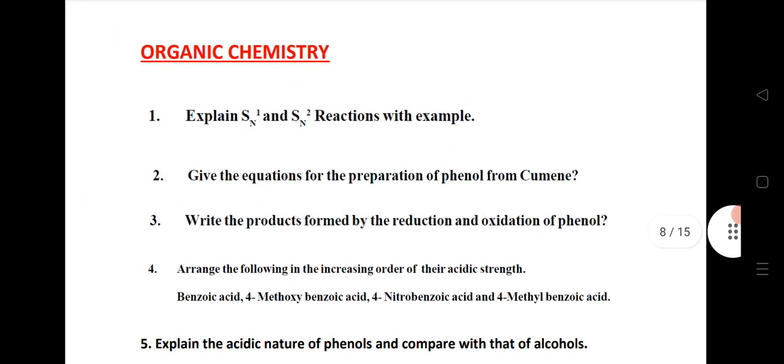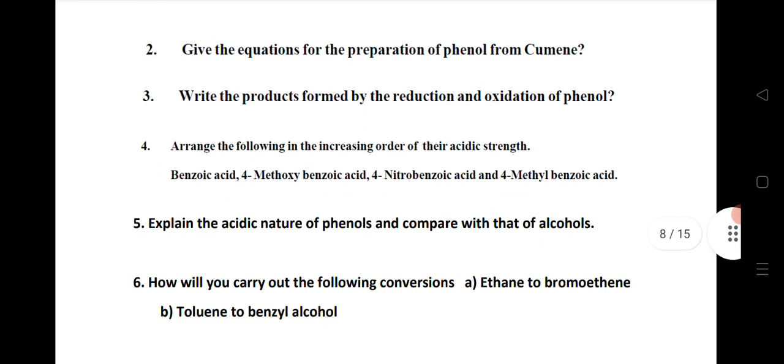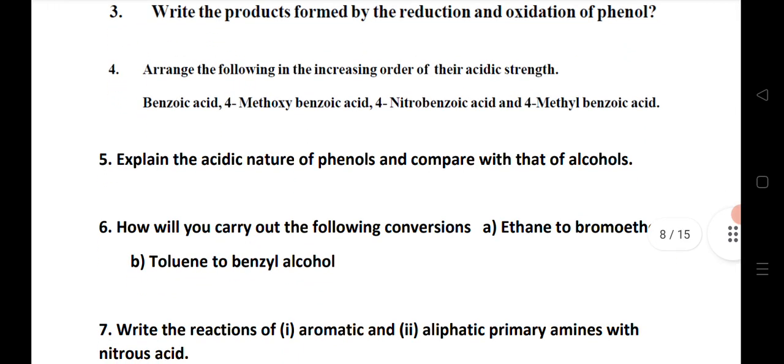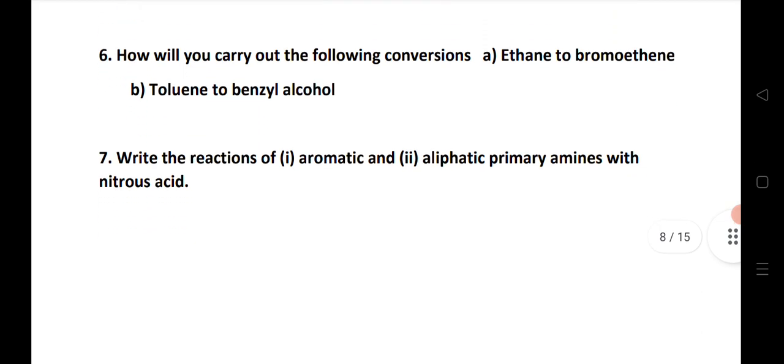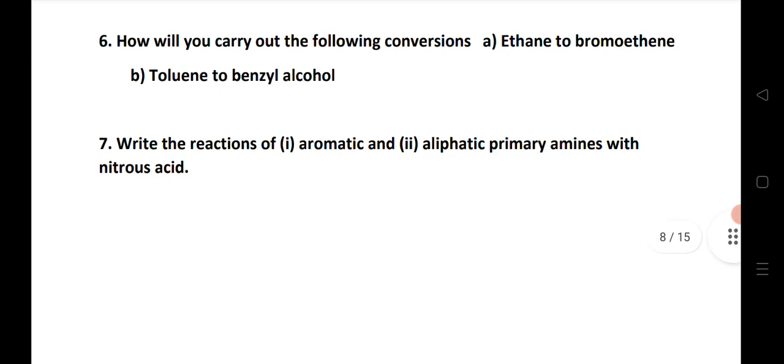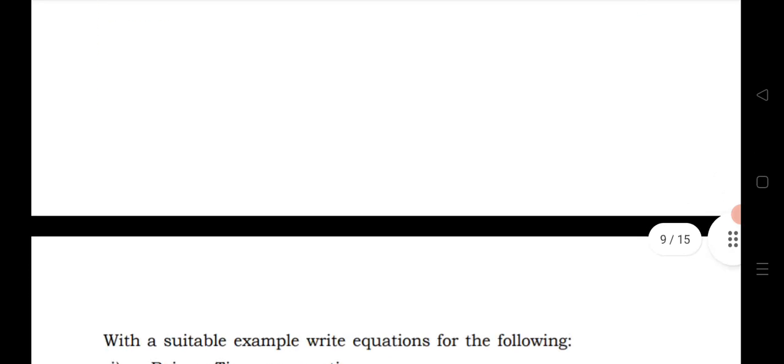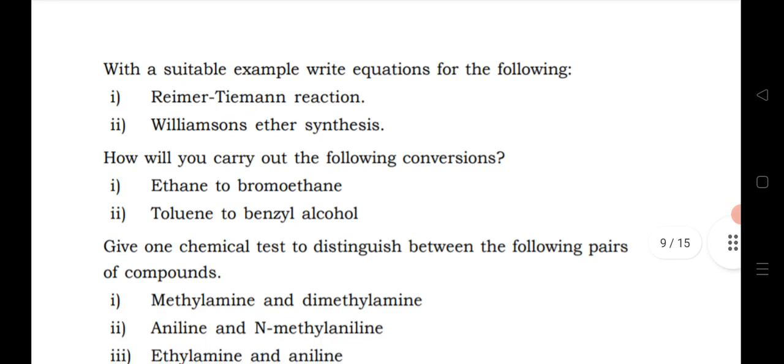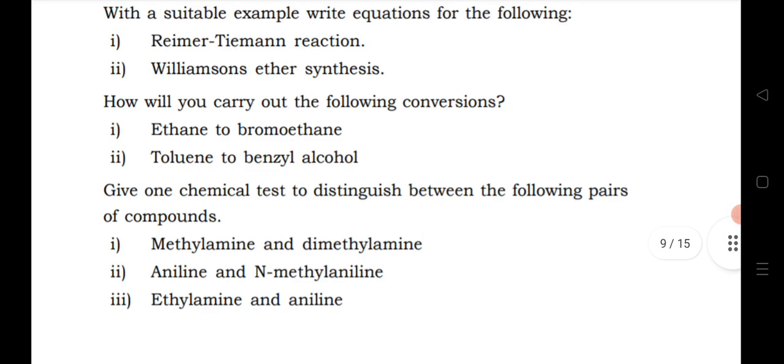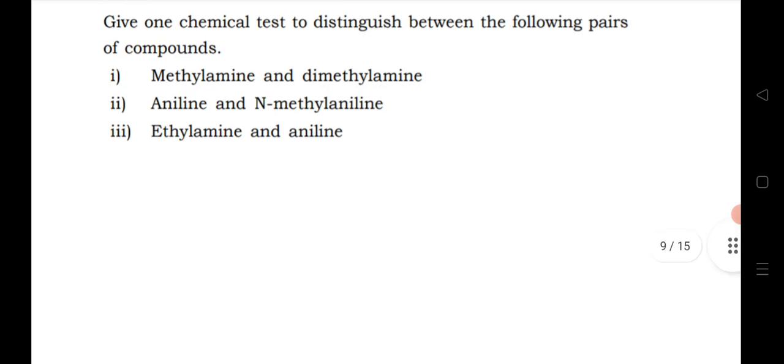Next chapter organic chemistry SAQ questions: SN1, SN2, give the reaction for the preparation of phenol from cumene, write the product formed by oxidation and reduction, arrange the following in increasing order of their acidic strength, acidic nature of phenol and compare with their alcohol. How will you carry out the conversion of ethane to bromoethane, ethene to ethyl, benzyl alcohol? Write the reaction of aromatic and aliphatic amines with nitrous acid. Next write the suitable reaction for Reimer-Tiemann reaction, Williamson ether synthesis, ethane to bromoethane, ethene to benzyl. This is same. Give one test to distinguish the pair: methylamine and dimethylamine, aniline and N-methylaniline, ethylamine and aniline.